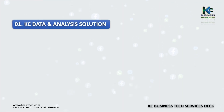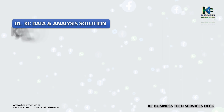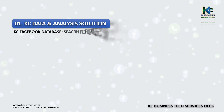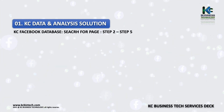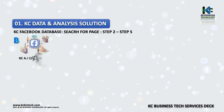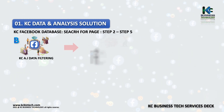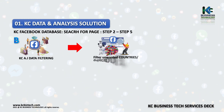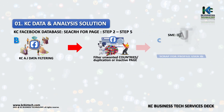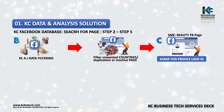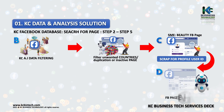KC Facebook Database Search for Page — Step 2 to Step 5. B. KC AI Data Filtering: Filter unwanted countries, duplication, or inactive pages. C. Scrap for Group Profile User ID. D. FB Page Engagement.